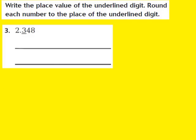Let's take a look at question number 3. The directions say to write the place value of the underlined digit, and then round each number to the place of the underlined digit. For question number 3, the decimal number given is 2 and 348 thousandths. Based on my knowledge of place value, I know that the 3, sitting right behind the decimal, is in the tenths place. So my first job is to write down that that 3 is in the tenths place.